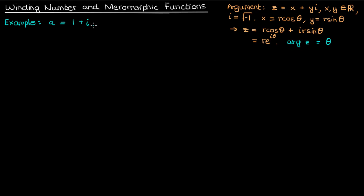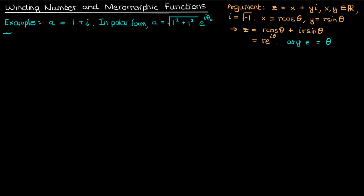As a quick example, consider the complex number a equals 1 plus i. We can convert a to polar form. The distance from the origin is the square root of x squared plus y squared, which is the square root of 1 squared plus 1 squared, which is the square root of 2. The angle of a relative to the positive real axis is the inverse tangent of 1 over 1, which is 45 degrees or pi over 4. Therefore the argument of a is pi over 4.